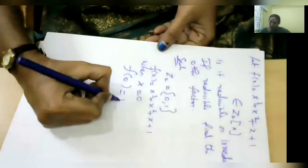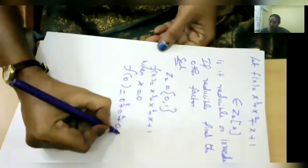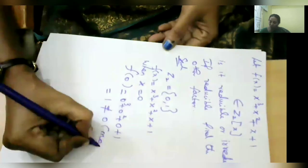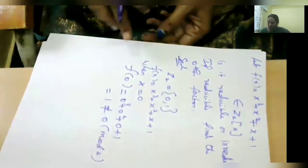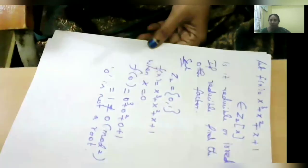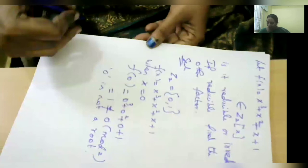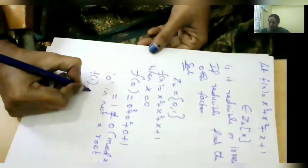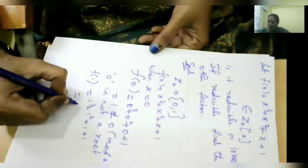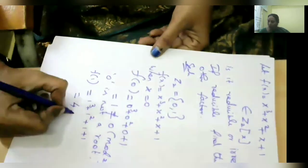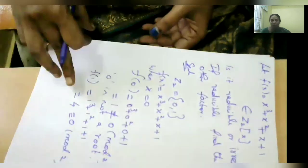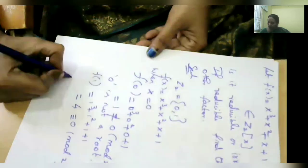Put x = 0: f(0) = 0³ + 0² + 0 + 1 = 1. We are getting remainder 1. This is not congruent to 0 mod 2. The remainder is not 0, so we can say 0 is not a root. Now check whether 1 is a root: f(1) = 1³ + 1² + 1 + 1 = 4. We get answer 4, and 4 is congruent to 0 mod 2 (4 ÷ 2 gives quotient 2, remainder 0). Therefore 1 is a root.